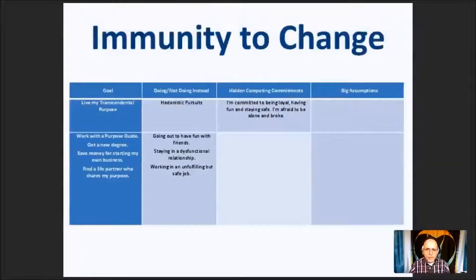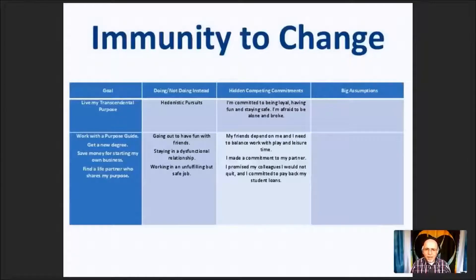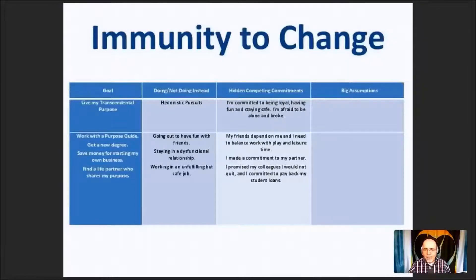There are hidden competing commitments preventing us from pursuing our goals — for example, being committed to loyalty, having fun, and staying safe, or being afraid to be alone and broke. There are also assumptions we tell ourselves about why we cannot pursue our goal: my friends depend on me, I made a commitment to my partner, I promised my colleagues I wouldn't quit, or I need to pay back student loans. These are all valid things — I'm not saying radically change your life — but they are often hindrances to even starting to identify and live our transcendental purpose.